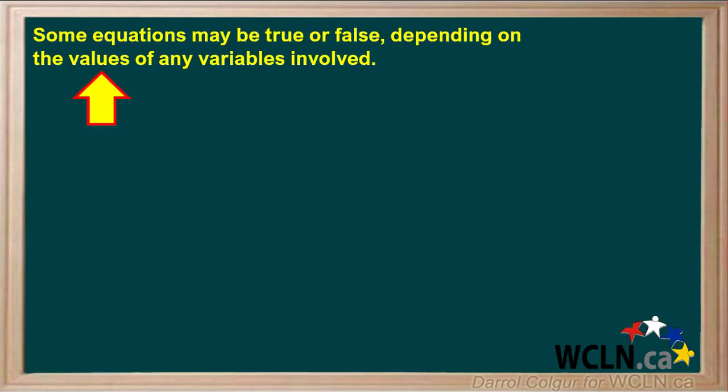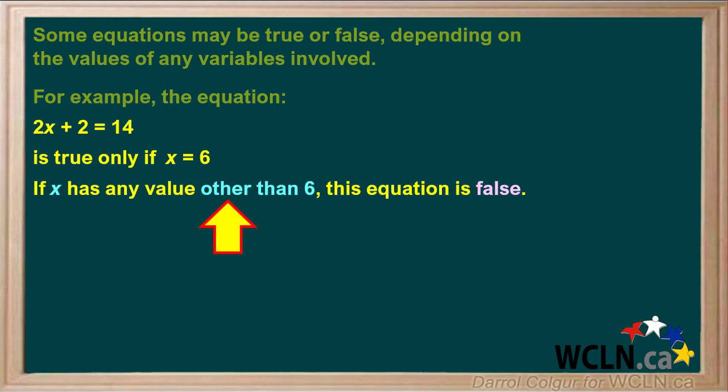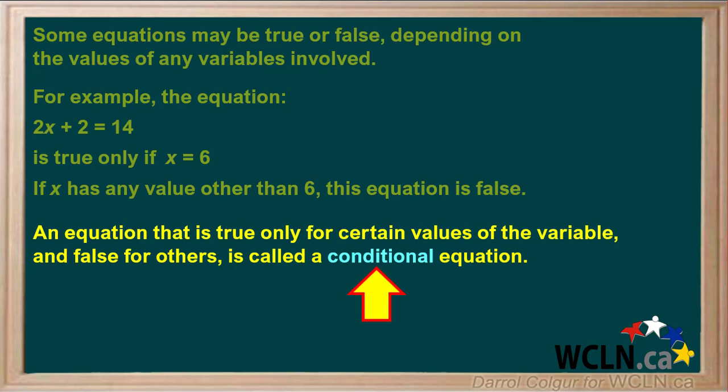Some equations may be true or false depending on the values of any variables involved. For example, the equation 2x + 2 = 14 is true only if x is equal to 6. If x has any value other than 6, this equation is false. An equation that is true only for certain values of the variable and false for others is called a conditional equation.